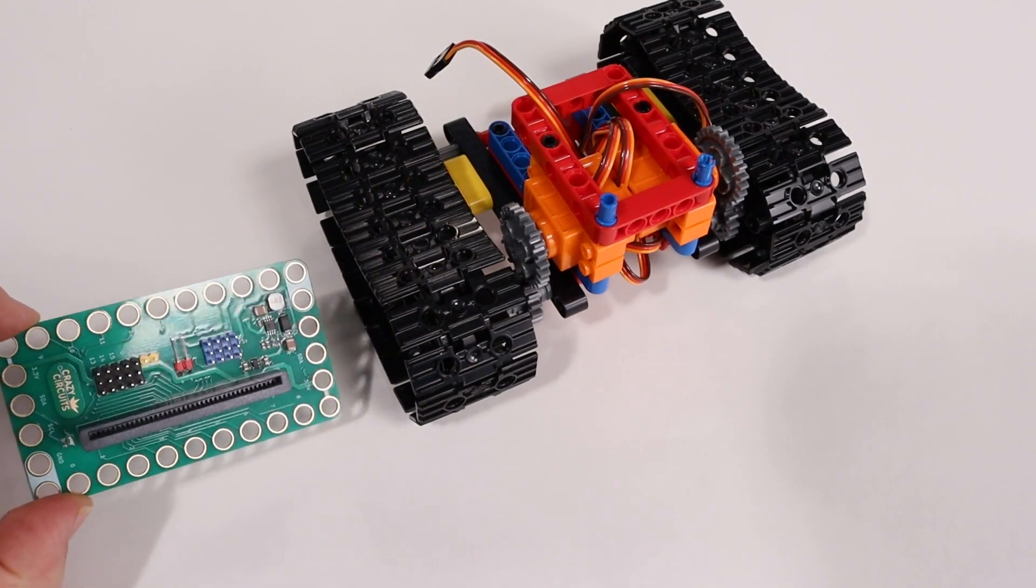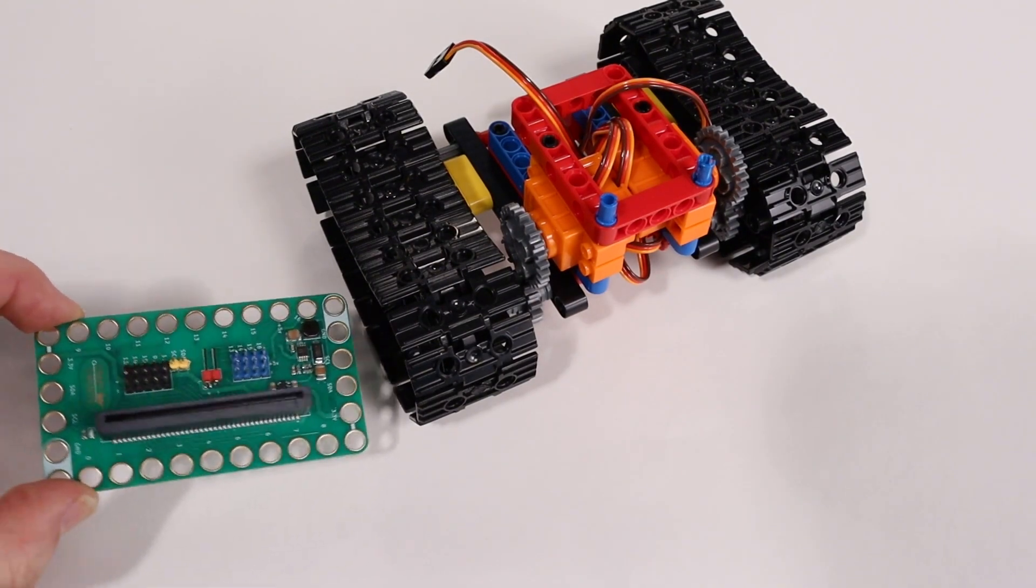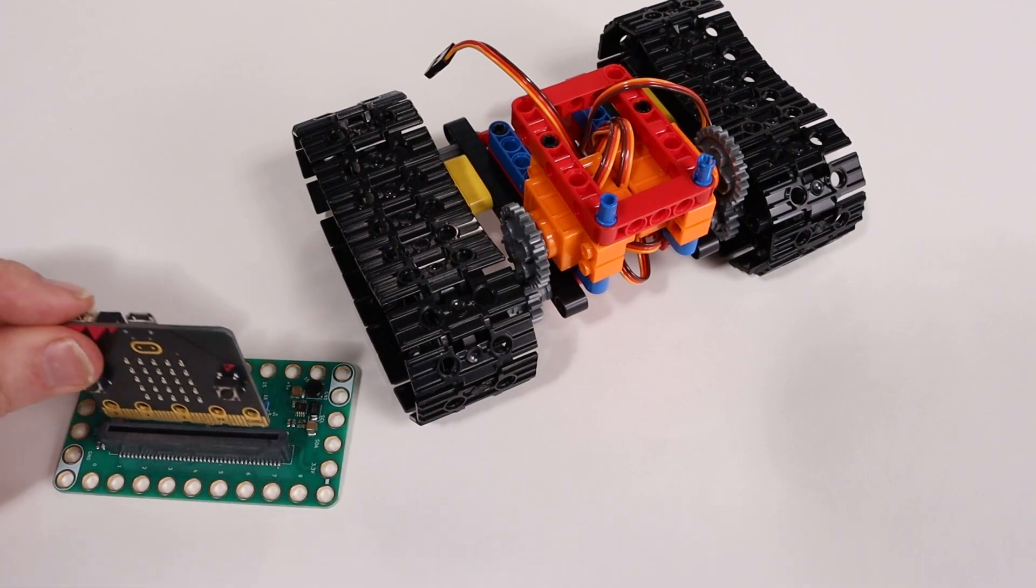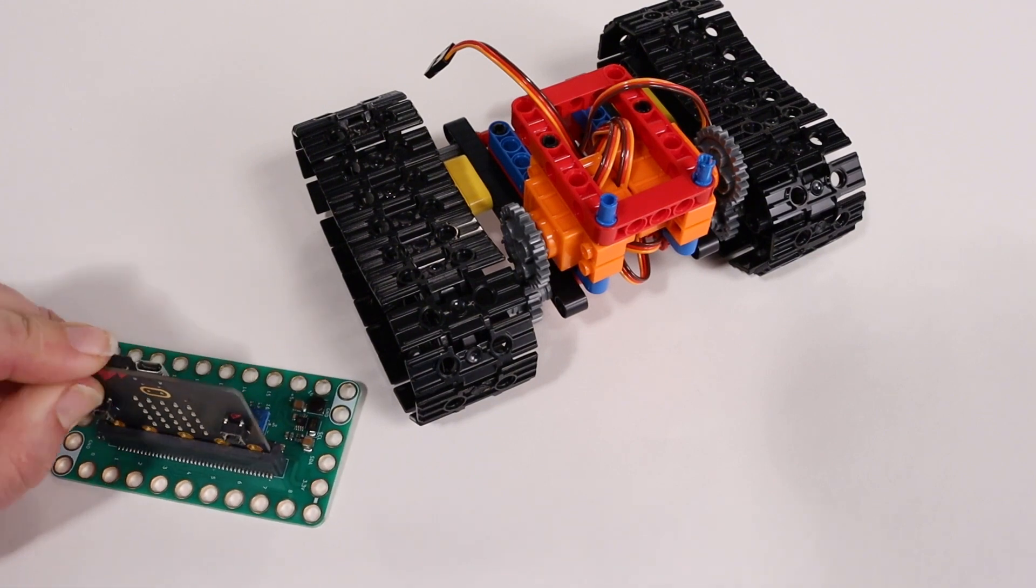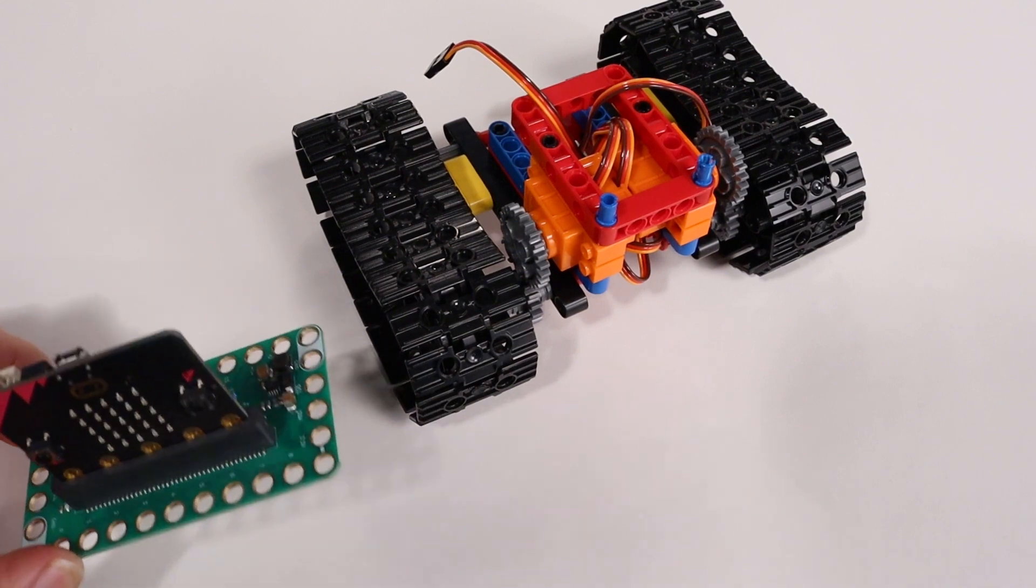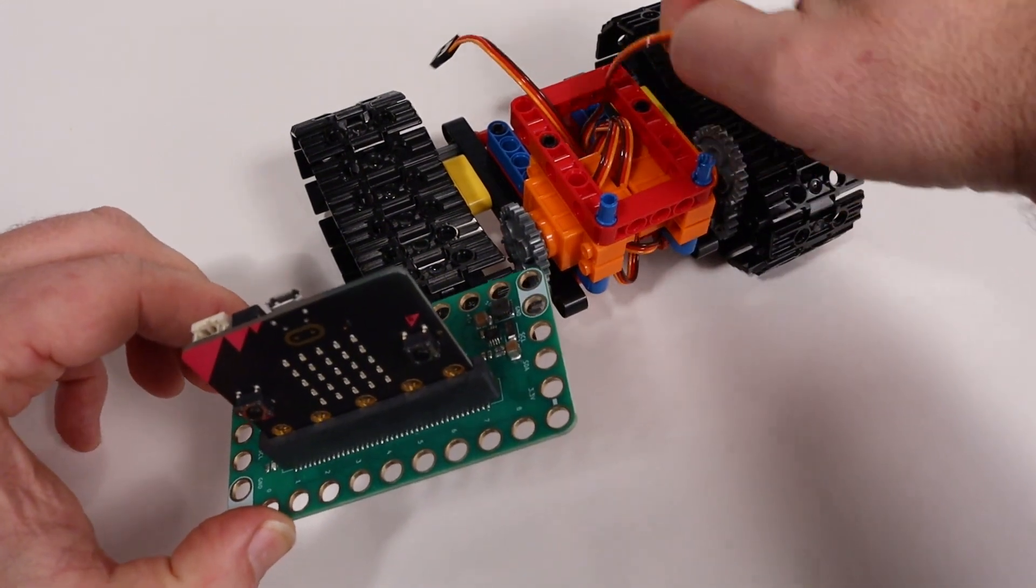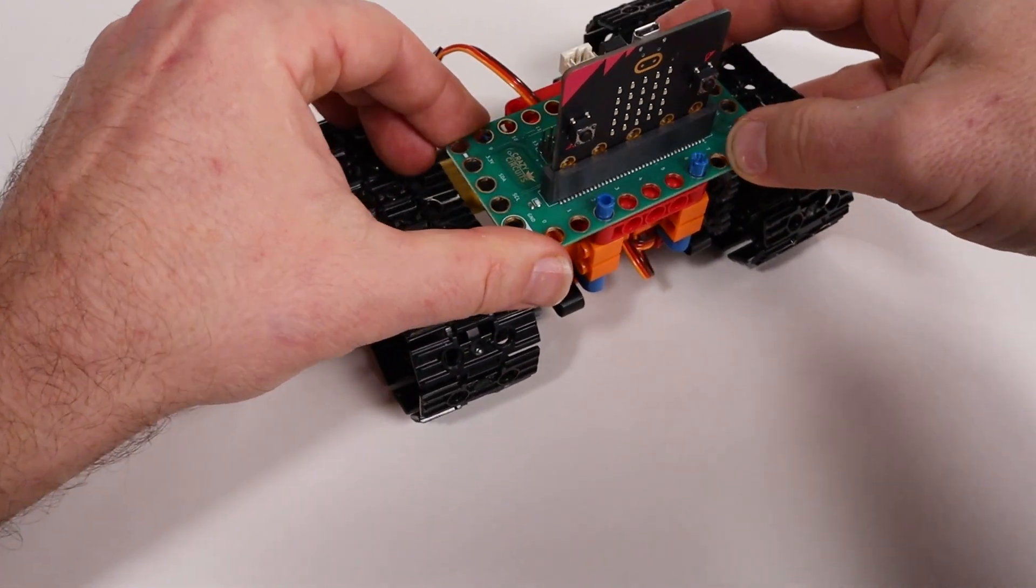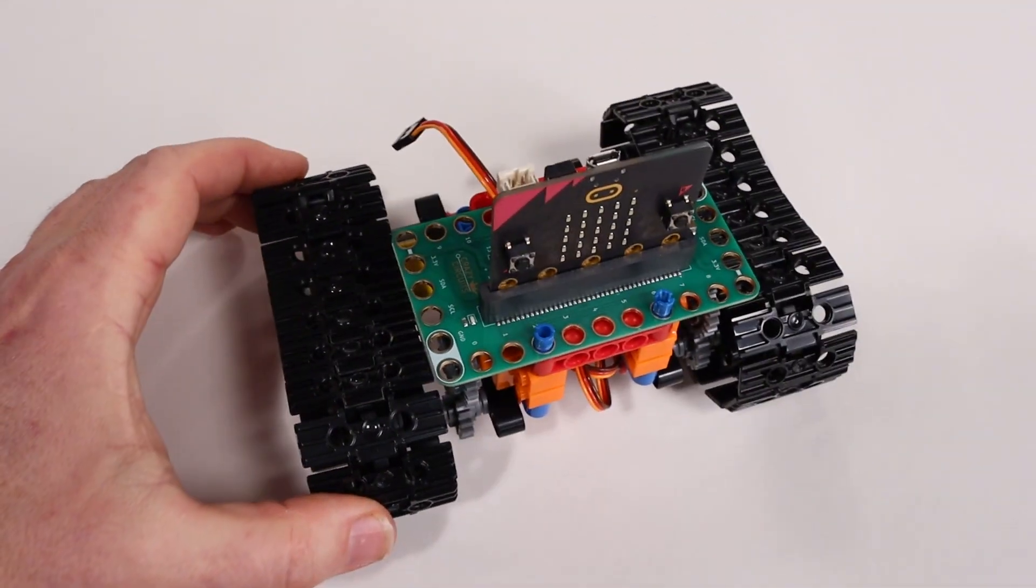Now we'll add the bit board. The bit board snaps down over the two blue pins. First, we'll add the micro bit. Just insert the micro bit directly into the bit board. Make sure the LED display is facing front. Then set the bit board over the tank and press it down over the two blue pins.